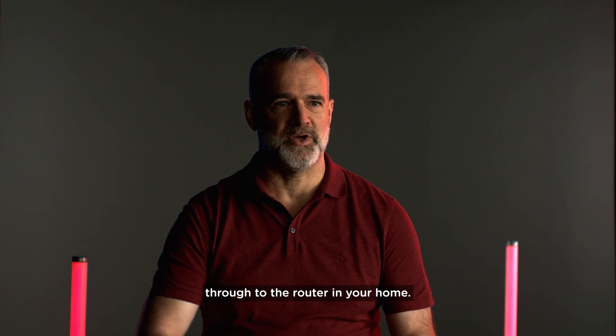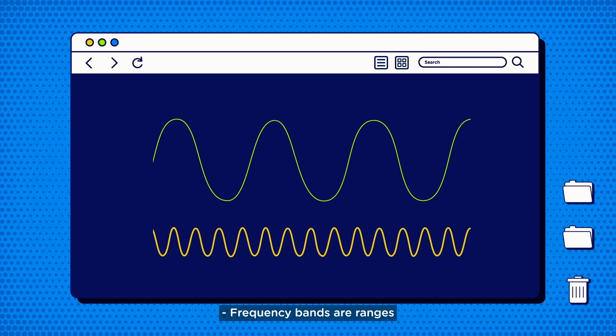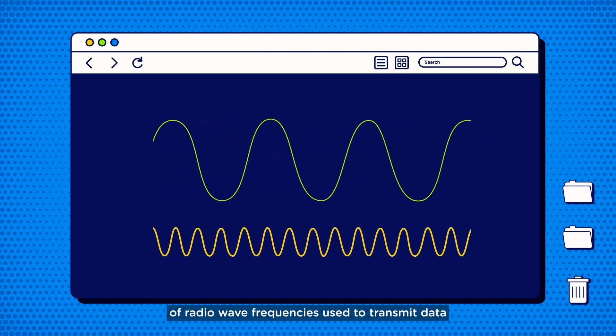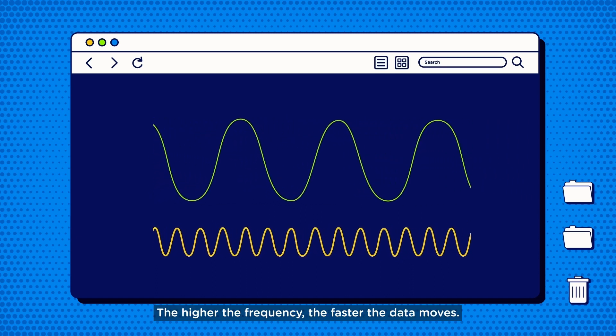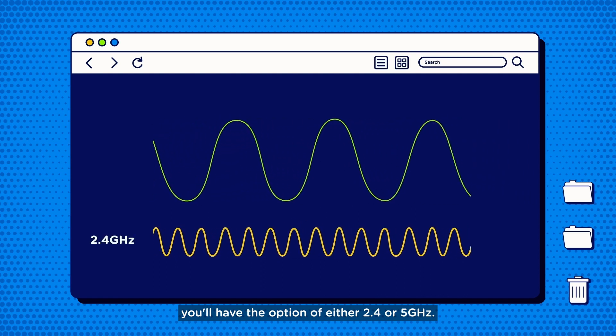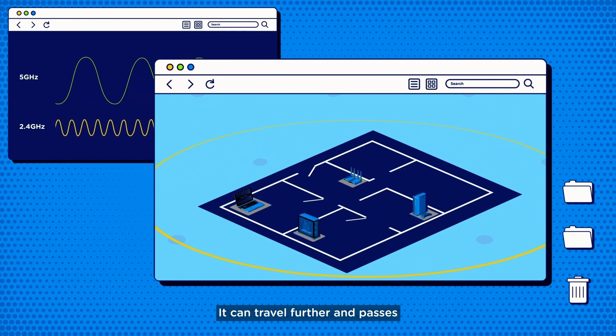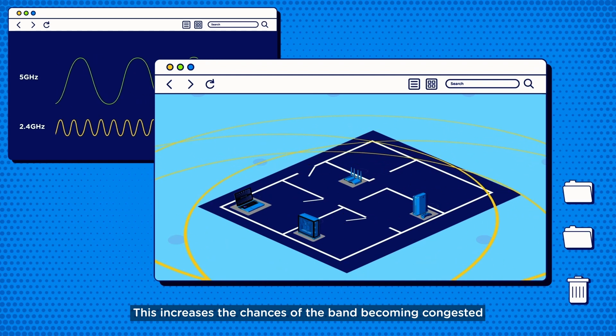Frequency bands are ranges of radio wave frequencies used to transmit data on the wireless spectrum. The higher the frequency, the faster the data moves. Most of the time you'll have the option of either 2.4 or 5 gigahertz. 2.4 gigahertz is the standard frequency. It can travel further and passes through walls and objects more effectively. It is, however, the narrower bandwidth of the two. This increases the chances of the band becoming congested with other traffic from neighboring access points.